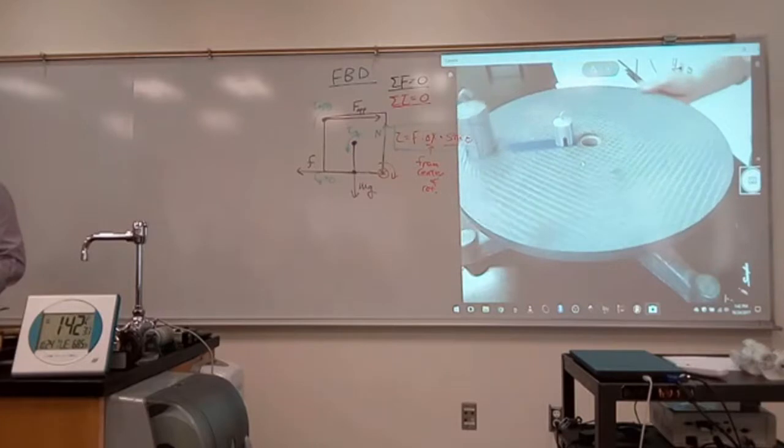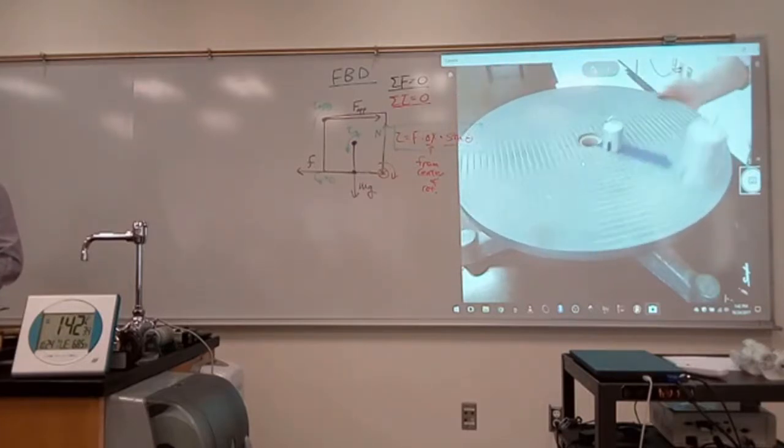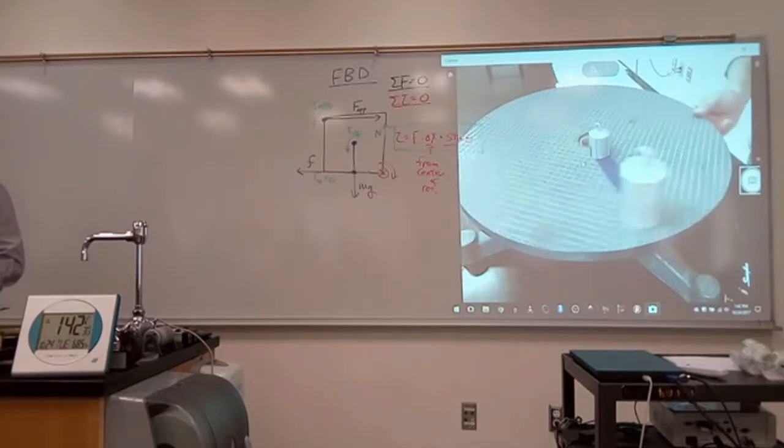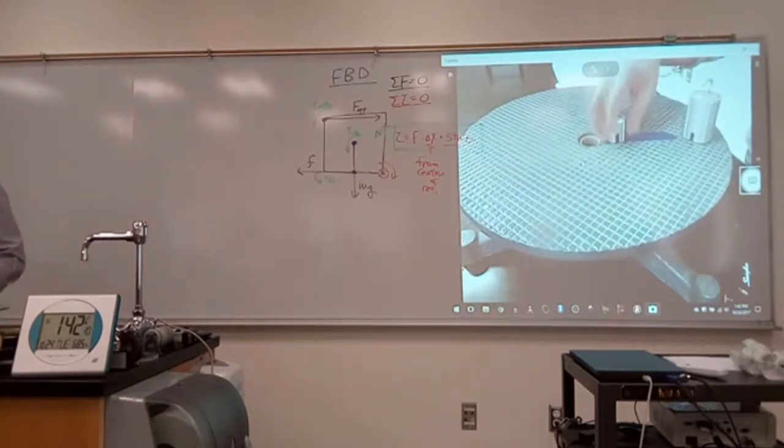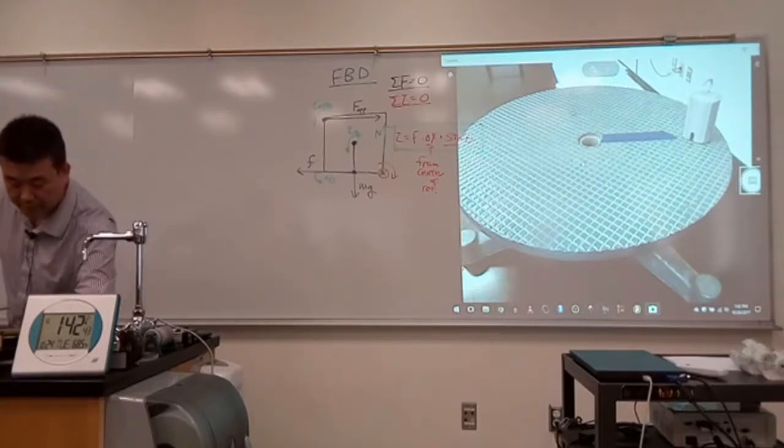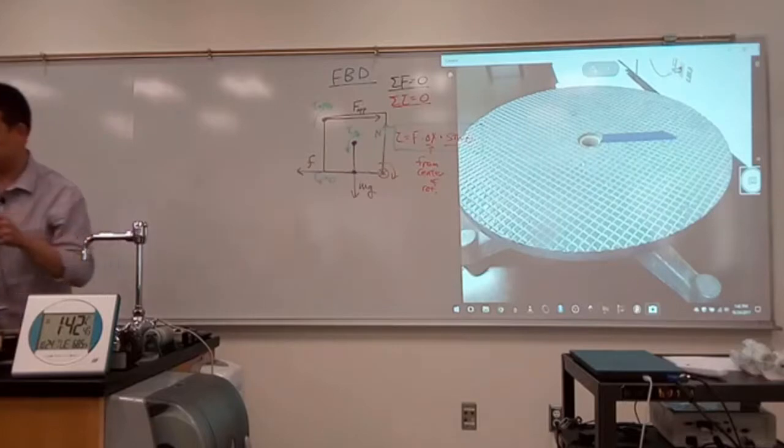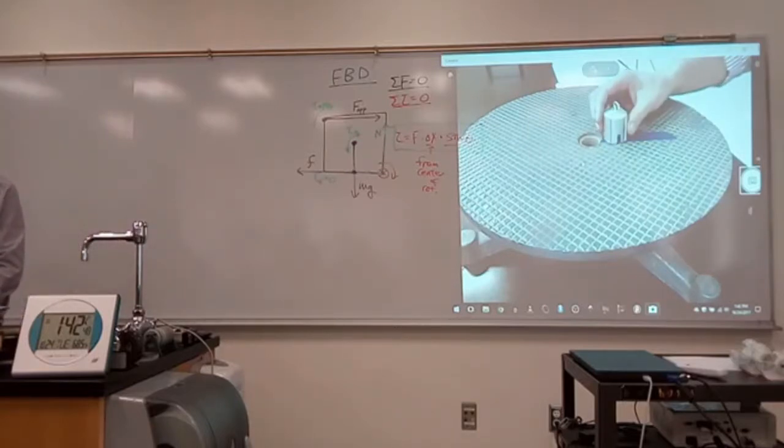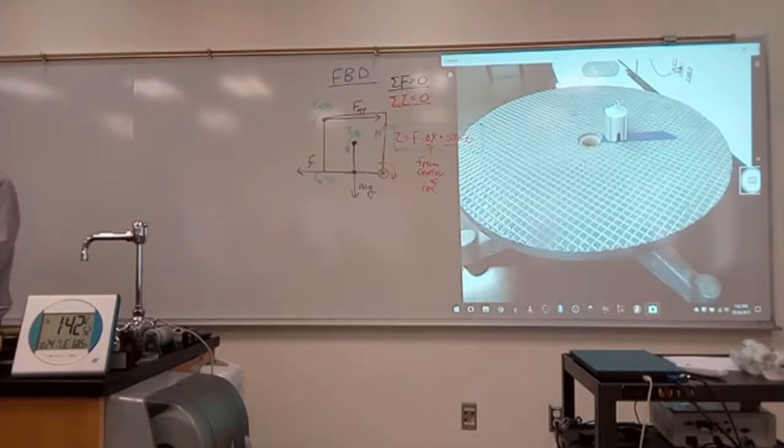These two are at the same angular position, as you can see on the screen. Actually, let me make them the same mass so you can see the difference. I have two 200-gram masses. The one on the inside is Alice, and the one on the outside is Bob.